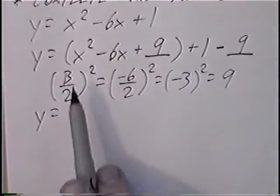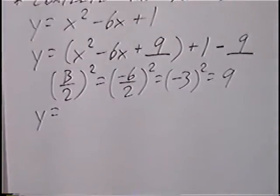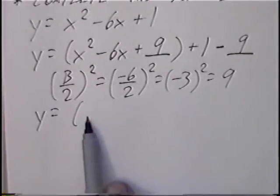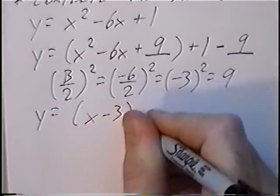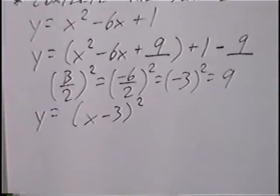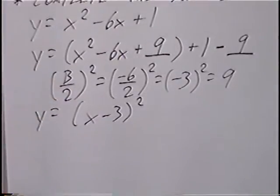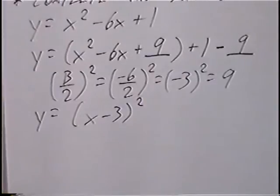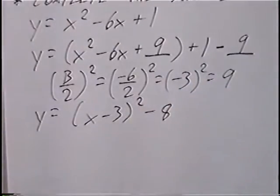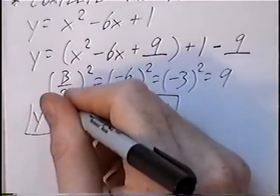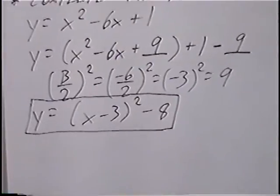Factoring x squared minus 6x plus 9: using the completing-the-square shortcut, the number inside the parentheses is negative 3, so the factored form is (x minus 3) squared. Outside the parentheses we have positive 1 minus 9, which simplifies to negative 8. So the final answer in vertex form is y equals (x minus 3) squared minus 8.